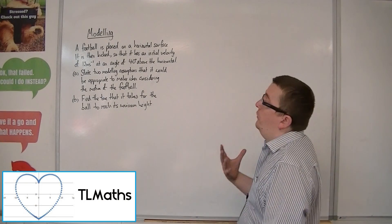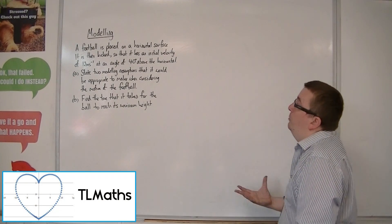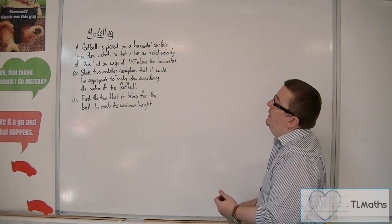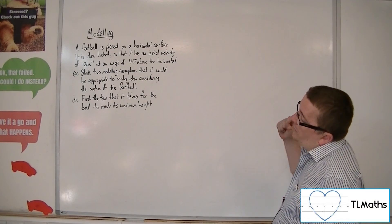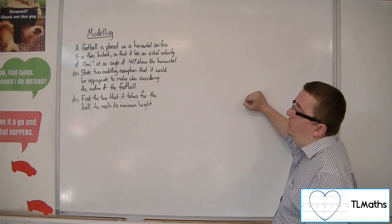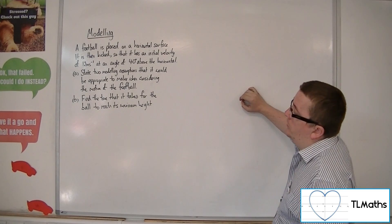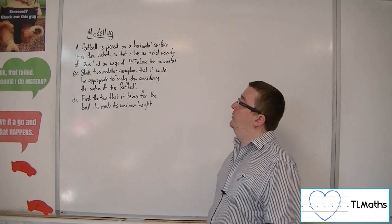In this problem, we have a football placed on a horizontal surface. It is then kicked so that it has an initial velocity of 12 metres per second at an angle of 40 degrees above the horizontal.